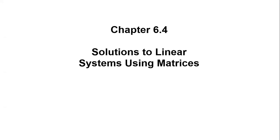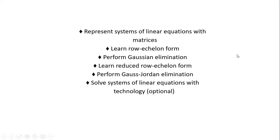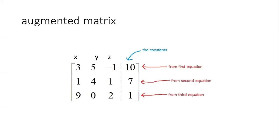Chapter 6.4: solutions to linear systems using matrices. So an augmented matrix — the first equation goes in the first row, the second equation goes in the second row, and the third equation goes in the third row. You are eliminating the variables out of the situation but keeping the coefficients and the constants. The dashed line is optional, but this is how you take your system and turn it into a matrix.